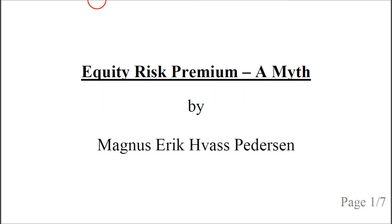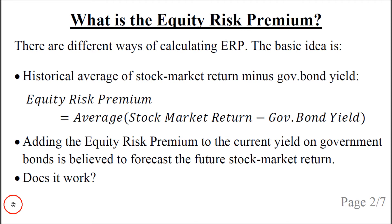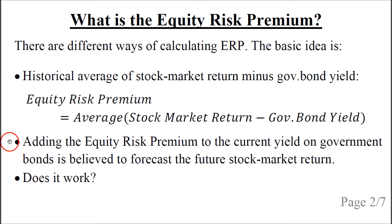Hello, my name is Magnus Petersen and this talk is about the so-called equity risk premium, and we will see that it is in fact a myth. The basic idea is that we take the historical average of the stock market return minus the government bond yield. We could write it mathematically something like this. The idea is then that we add this average — the so-called equity risk premium — to the current yield on the government bond, which is then believed to forecast the future stock market return.